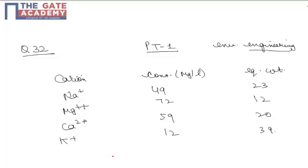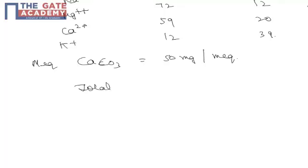It is asked that if the milliequivalent weight of CaCO3 is 50 milligrams per milliequivalent, what is the total hardness of water in milligrams per liter in terms of CaCO3? Total hardness of water is expressed in terms of CaCO3 and is only because of the presence of Mg2+ and Ca2+.